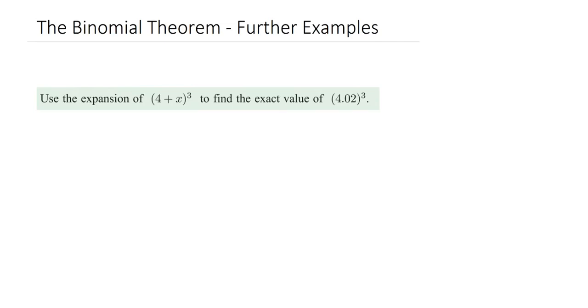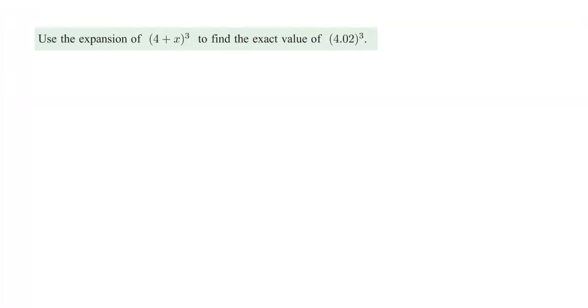In this video, we're going to take you through some of the most challenging questions you can be asked on the binomial theorem. So in this first example, we have to work out an exact value of 4.02 cubed without a calculator. And we're going to use binomial expansions to do it.